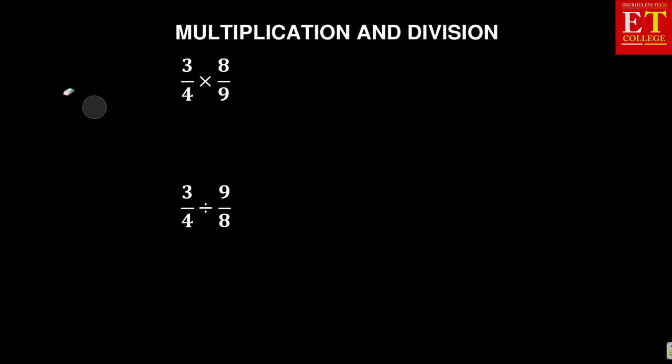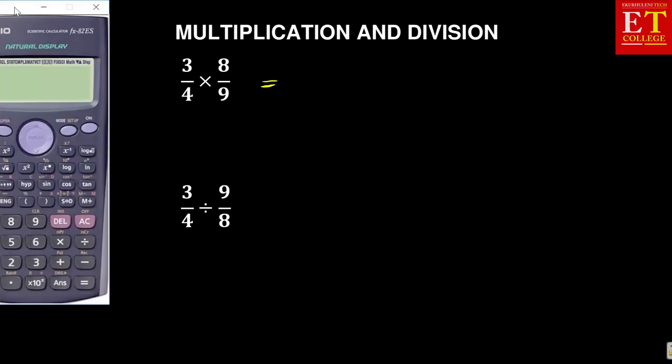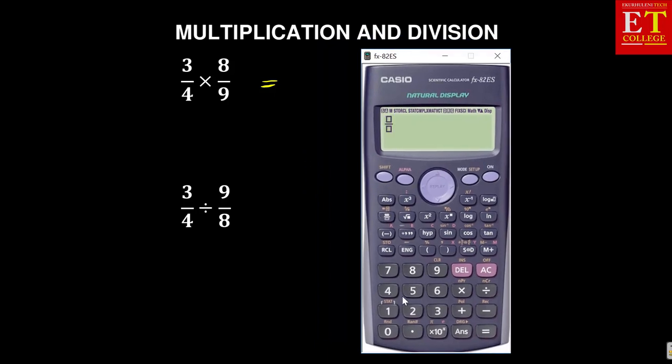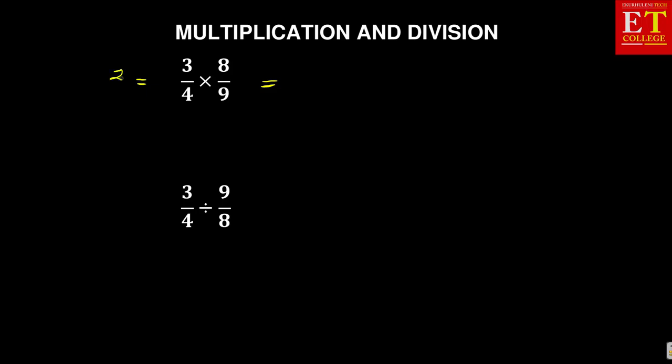When we're dealing with multiplication or division, the concepts are usually related but with a slight difference. Let us start with the multiplication of a fraction. We have 3/4 times 8/9, and the answer is 2/3. We're going to work and prove that.